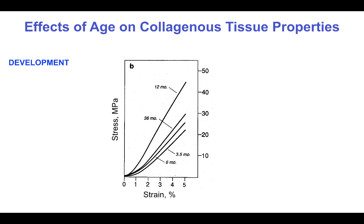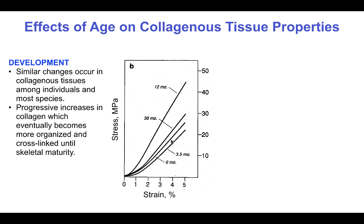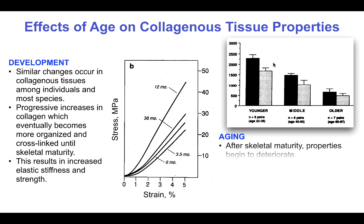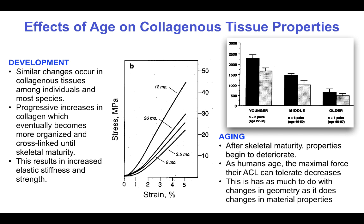Age is one of a number of important factors that affects the properties of collagenous tissues. During development, collagenous tissues of rabbits — similar to other species — progressively increase in stiffness from 3 to 5 to 12 months of age, but by 36 months have started to decline after skeletal maturity. In humans, the strength of collagenous tissues shows a significant decline after skeletal maturity, and the maximum force the anterior cruciate ligament can sustain is significantly impaired with aging. This reflects changes in geometry as much as changes in material properties — it is a structural property, not only a material property.